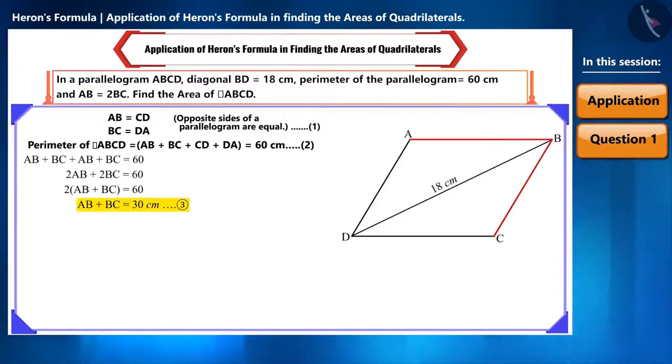We are given that AB is equal to 2 BC. In equation 3, in place of AB, we can write 2 BC. On doing so, we get the length of BC as 10 cm. Since AB is equal to 2 BC, AB will be equal to 20 cm.